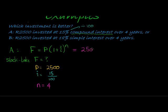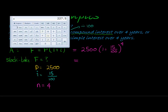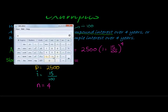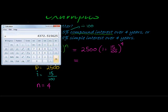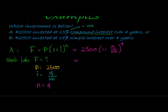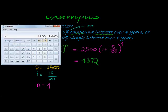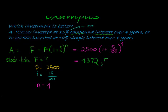So now we can substitute all of this into our formula: 2500, 1 plus 15 over 100 to the power of 4. Let's go and work that out using our calculator. 2500 times, in brackets, 1 plus 15 over 100, close the bracket to the power of 4, gives us 4372. So we get R4372.52.